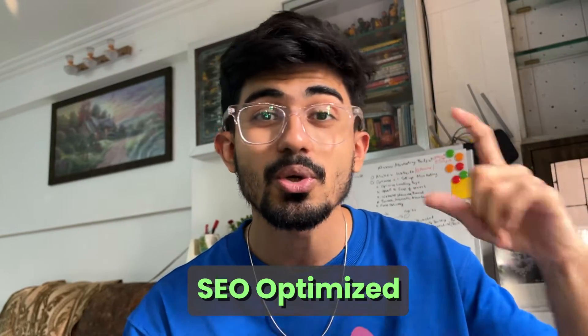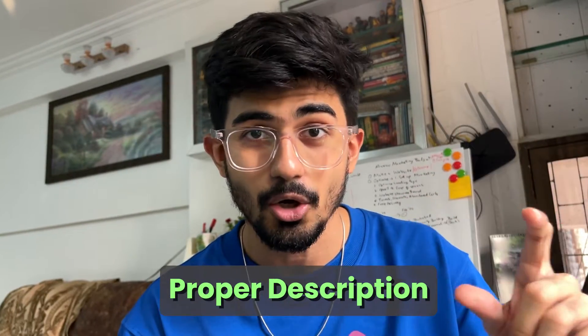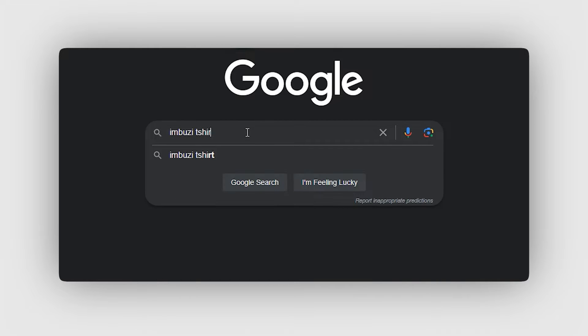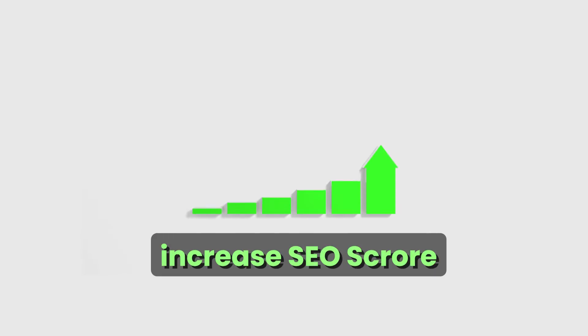When you name your products, make sure they are SEO optimized, and also add a proper description. The keywords you use in the description will help you rank better on Google and increase your SEO score. Once you have your products in place, you can also add many different customizations to your website, along with sections and containers.